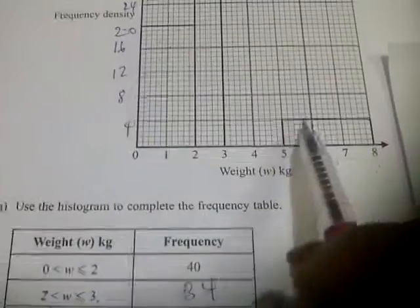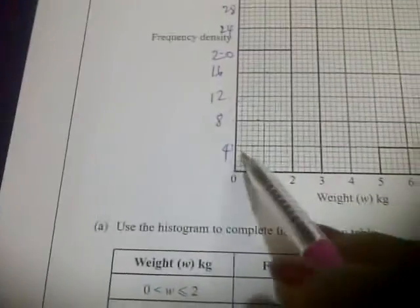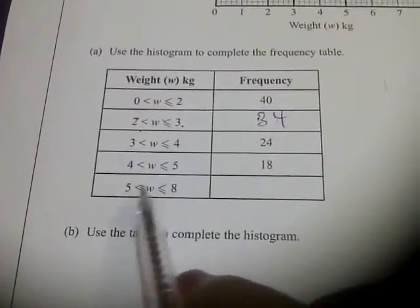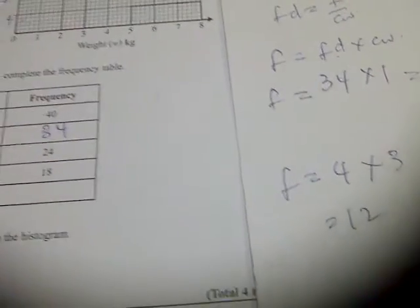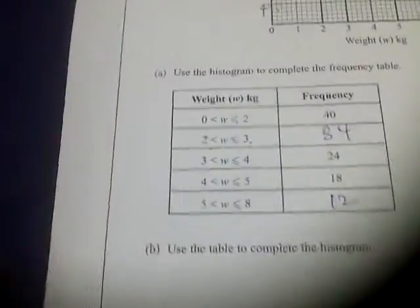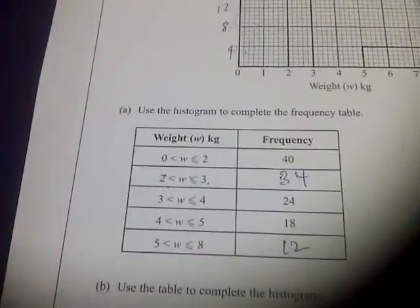For the last one, we know that is on 4. So frequency distribution is 4 times class width, which is 8 minus 5 is 3, and that is 12. So this one will be 12. That's it for 21a.